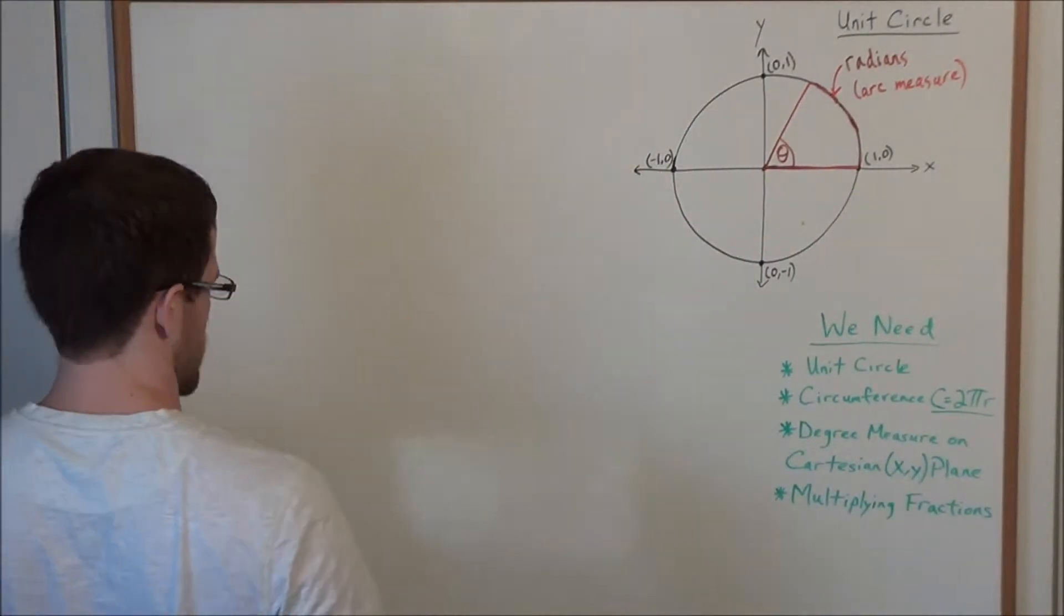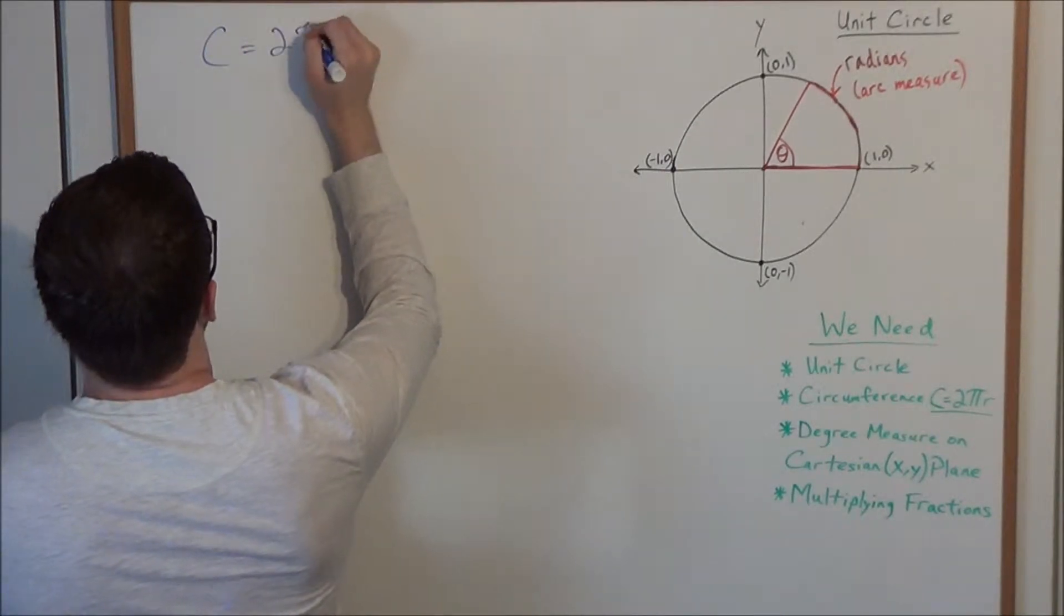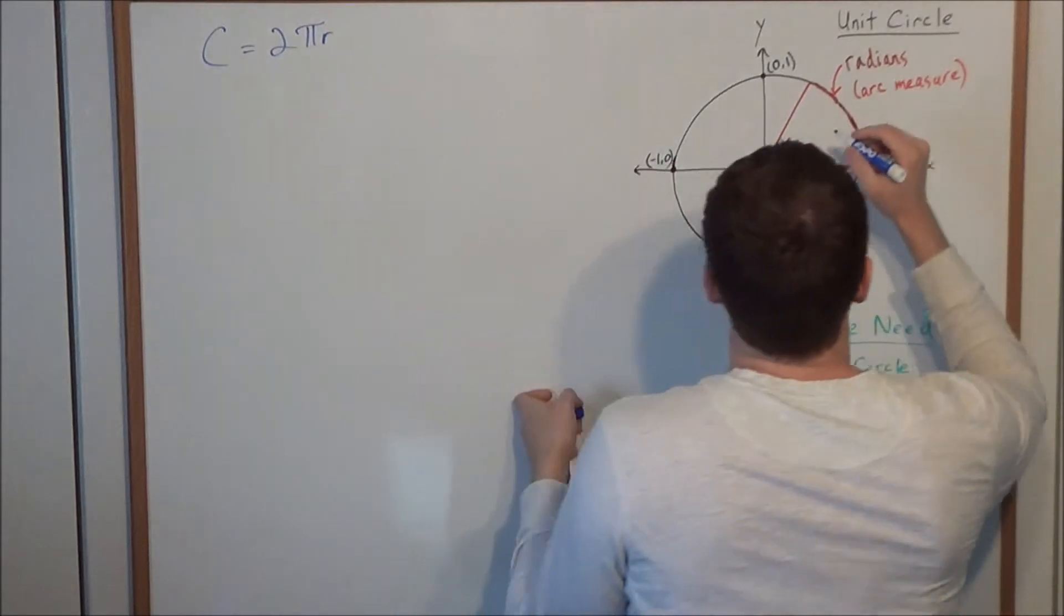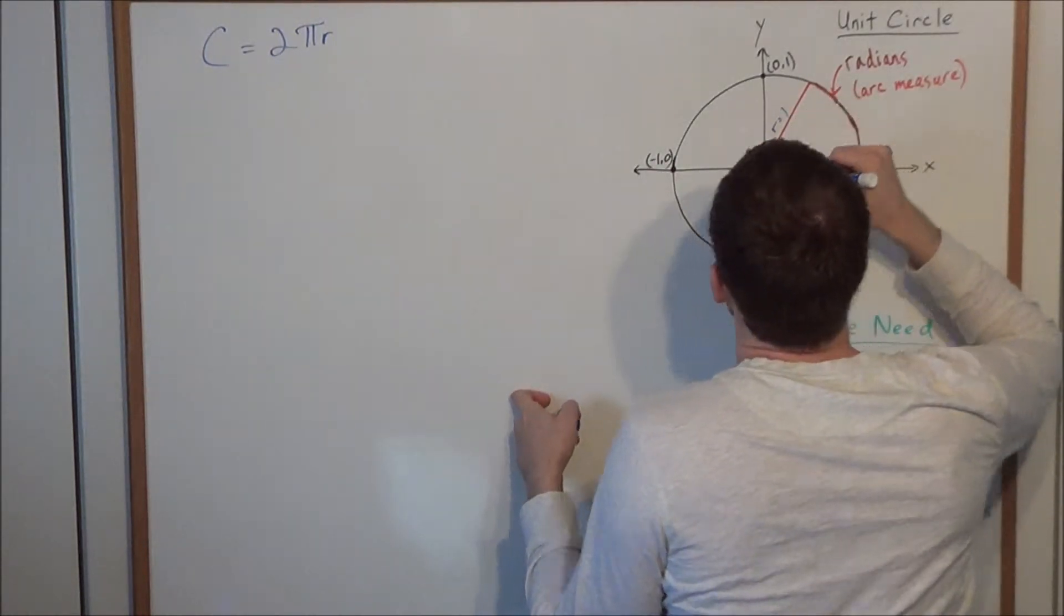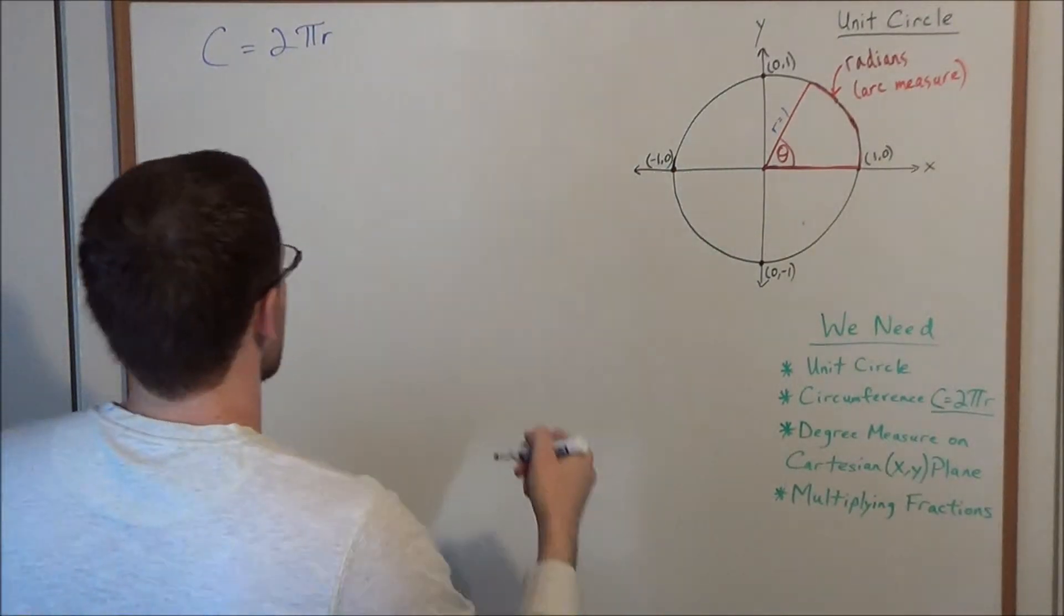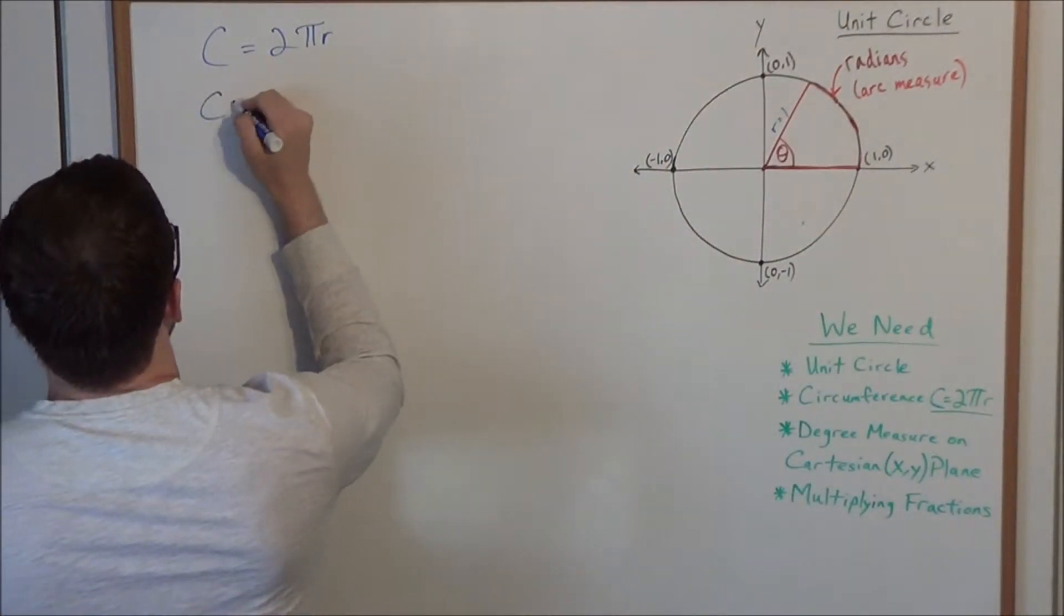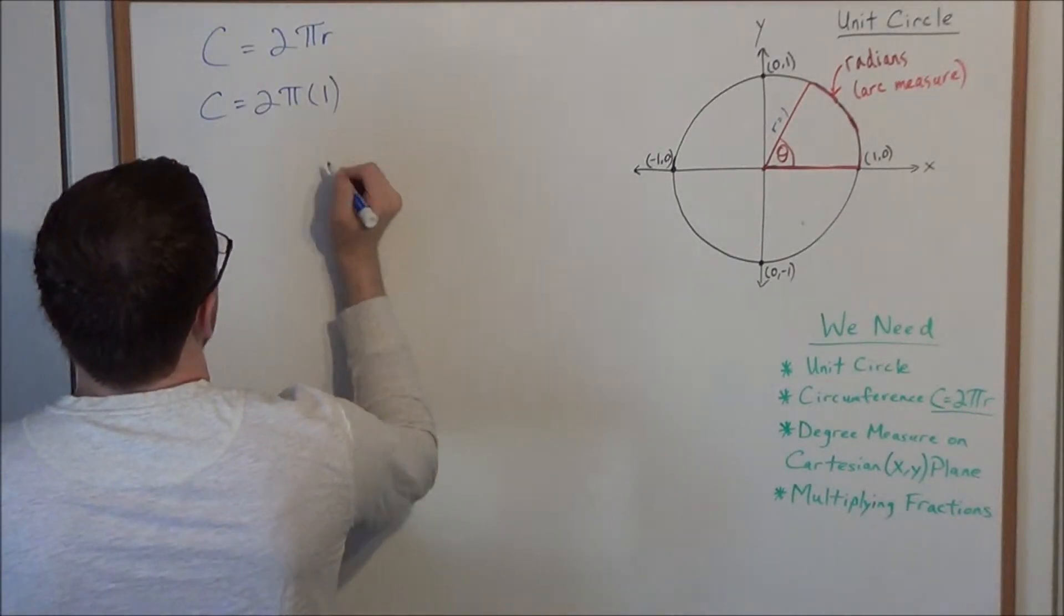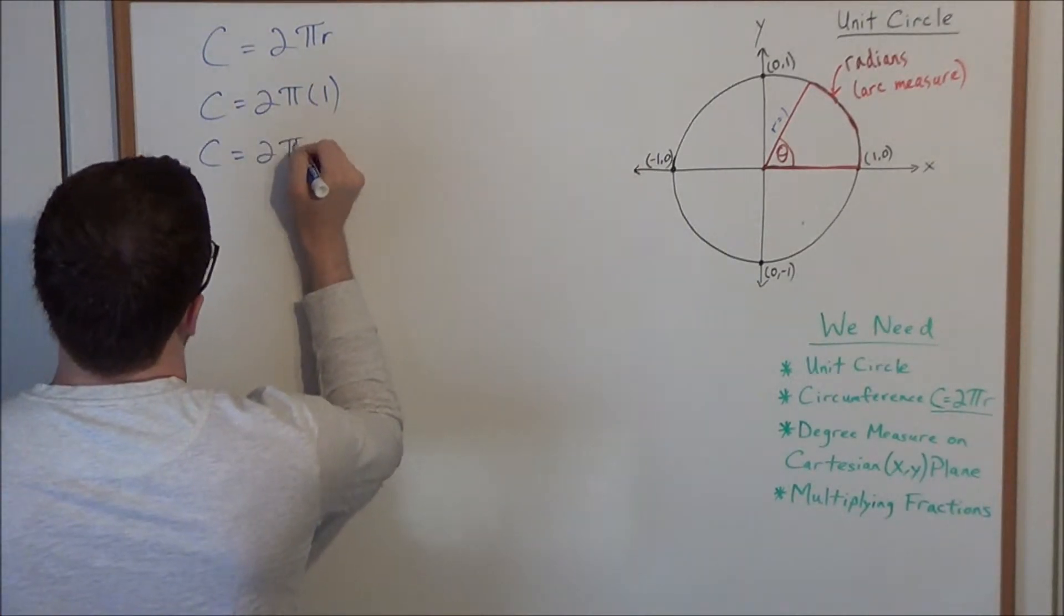In particular, we're looking at circumference equals 2πr. But what do we say? We're on the unit circle, and on the unit circle the definition tells us that the radius is equal to 1. So the entire circumference of this unit circle is simply C = 2π(1), and we have that the circumference of the unit circle is 2π.